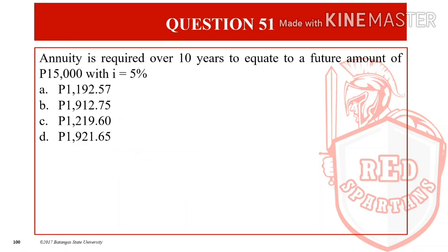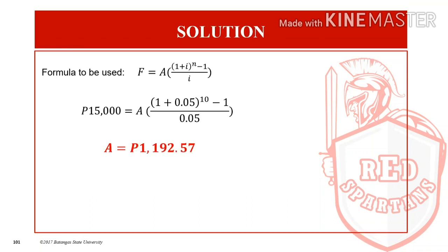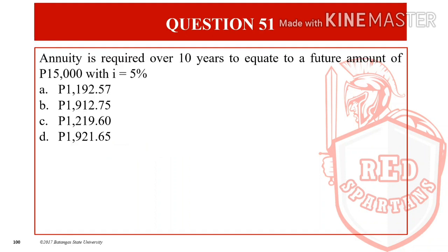For question number 51, an annuity is required over 10 years to equate to a future amount of P15,000 with I = 5%. We substitute the given values: P15,000 = A × ((1 + 0.05)^10 − 1) / 0.05. The annual payment or annuity is equal to P1,192.57, letter A.